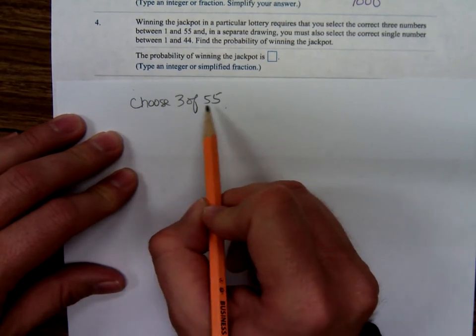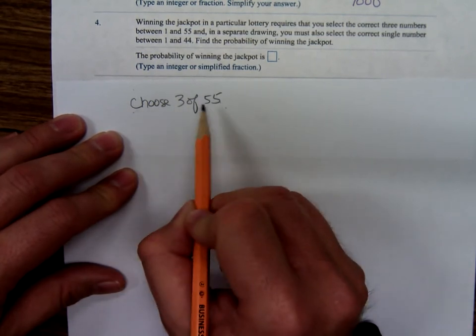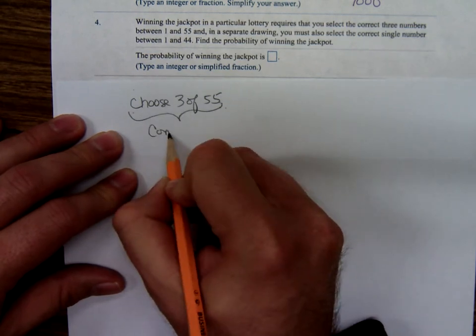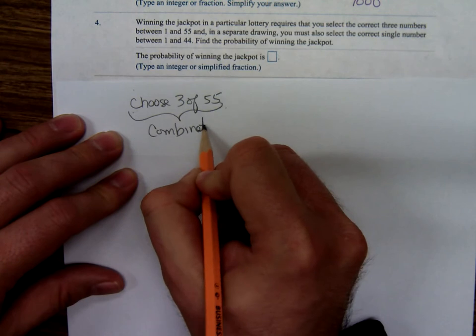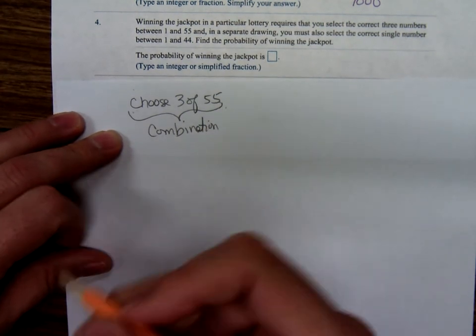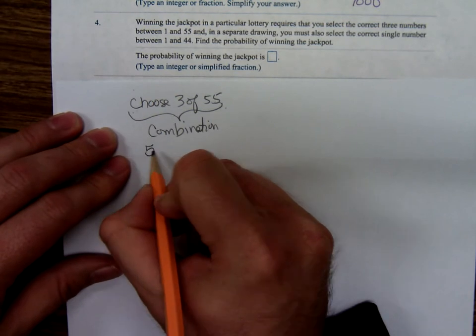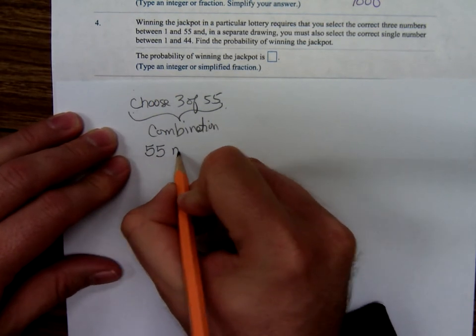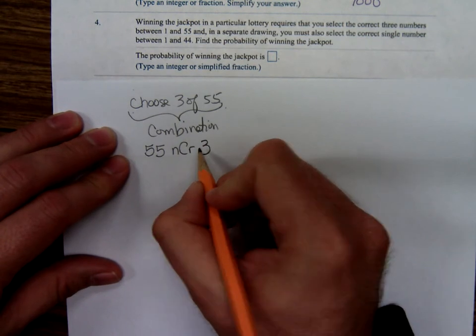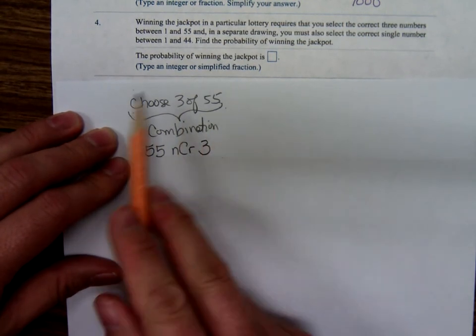Okay? Just choose the three of the 55 numbers. So that's going to be a combination of 55 things taken three at a time. The way you would punch that into your calculator, 55, then hit the NCR 3. That takes care of the first three balls.